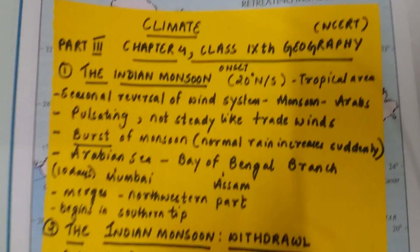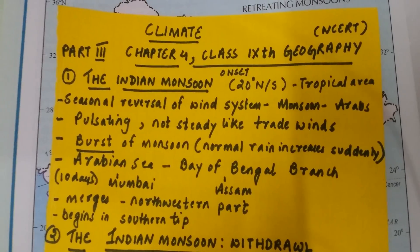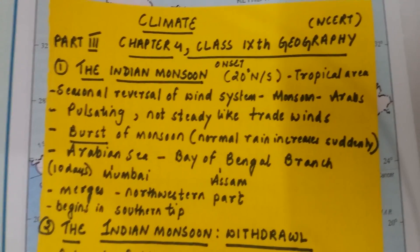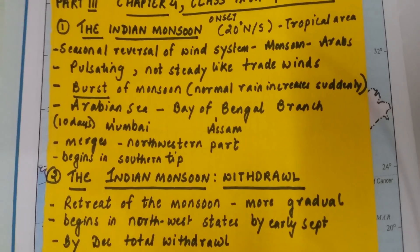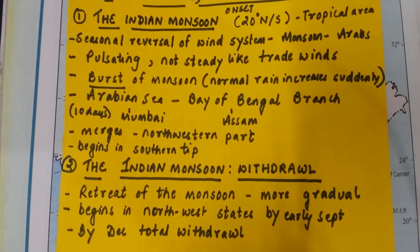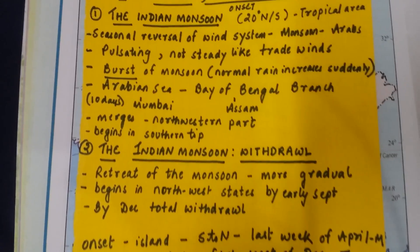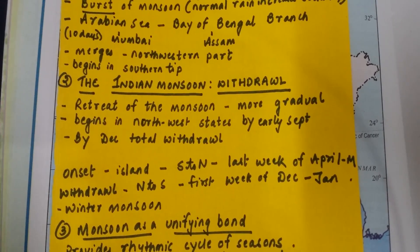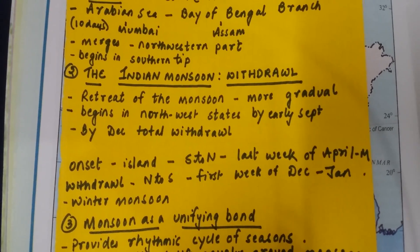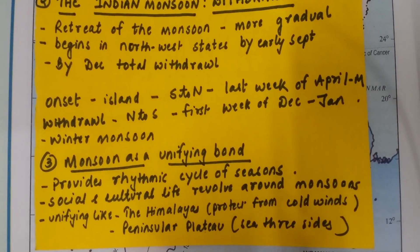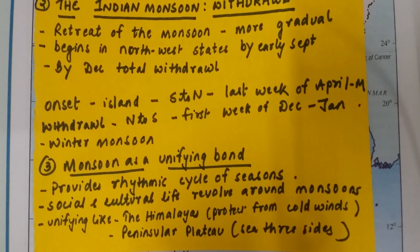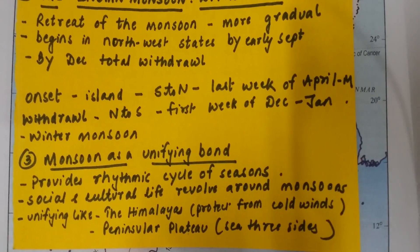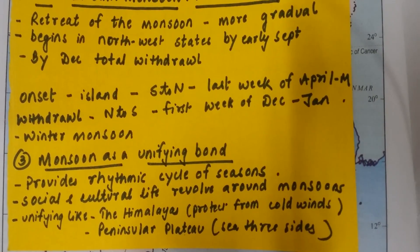To recap: we talked about the Indian monsoon and how it comes to our subcontinent with a seasonal reversal of wind system — it is pulsating and bursts suddenly, unlike gradual trade winds. We discussed the two branches, the Arabian Sea branch and the Bay of Bengal branch, and how they merge. Then we covered the withdrawal or retreat of monsoon, which is gradual and begins from the northwestern part. Finally, we talked about monsoon as a unifying bond in terms of social, cultural, and agricultural life and seasonality, and also the Himalayas and Peninsular Plateau as additional unifying bonds.